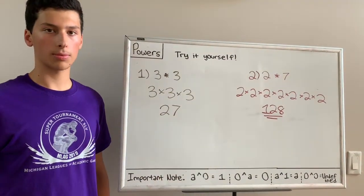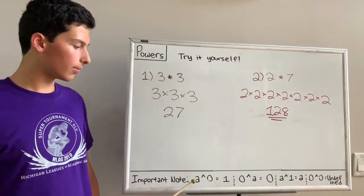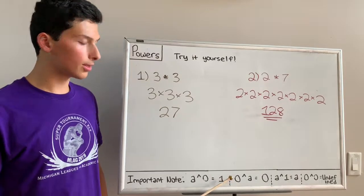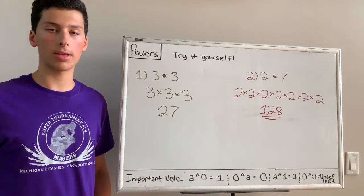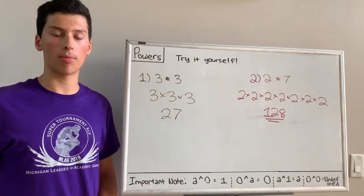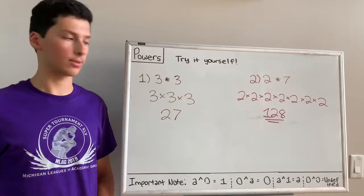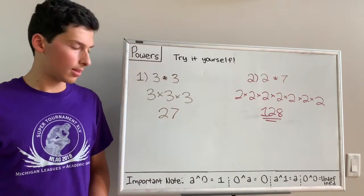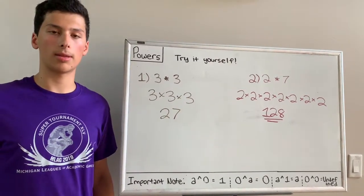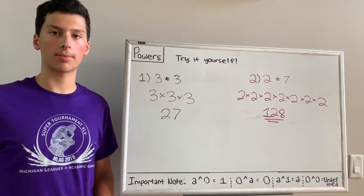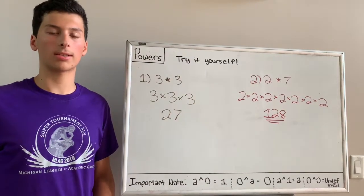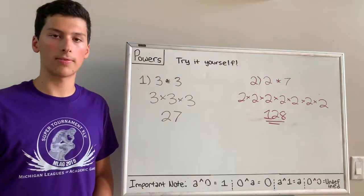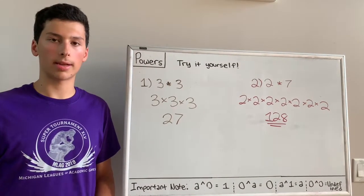There are some important notes when working with powers. First, any number to the power of 0 equals 1. Additionally, 0 to the power of any number equals 0, because 0 when multiplied with anything always equals 0. A to the power of 1 equals A — any number to the power of 1 is that number, because when you multiply something once, you keep that same number. Finally, 0 to the power of 0 is undefined and is illegal in academic games.